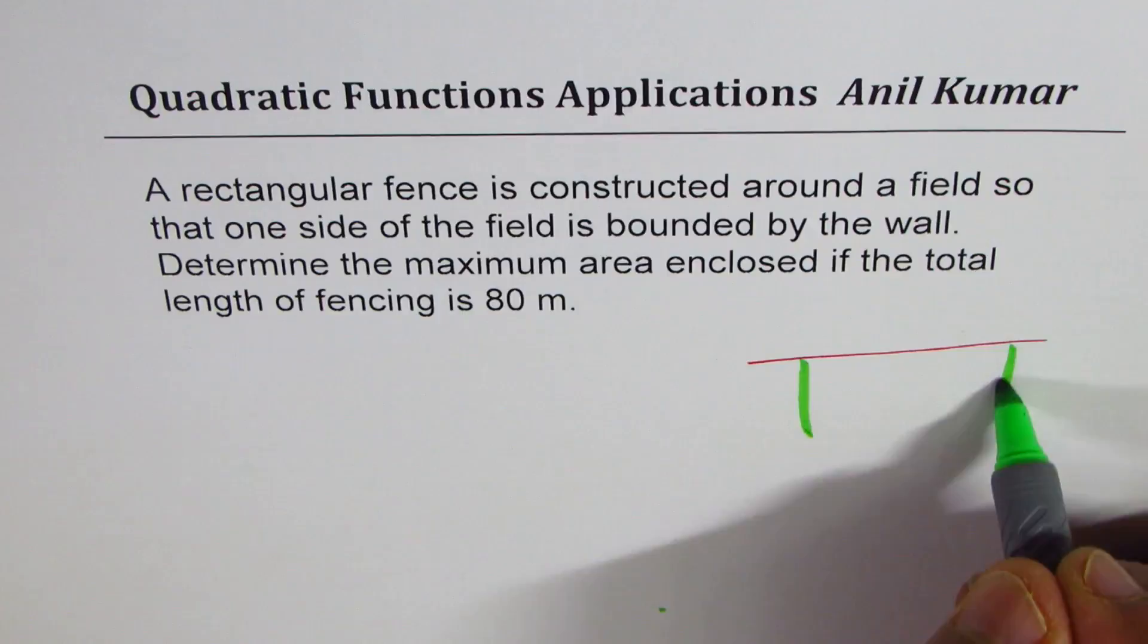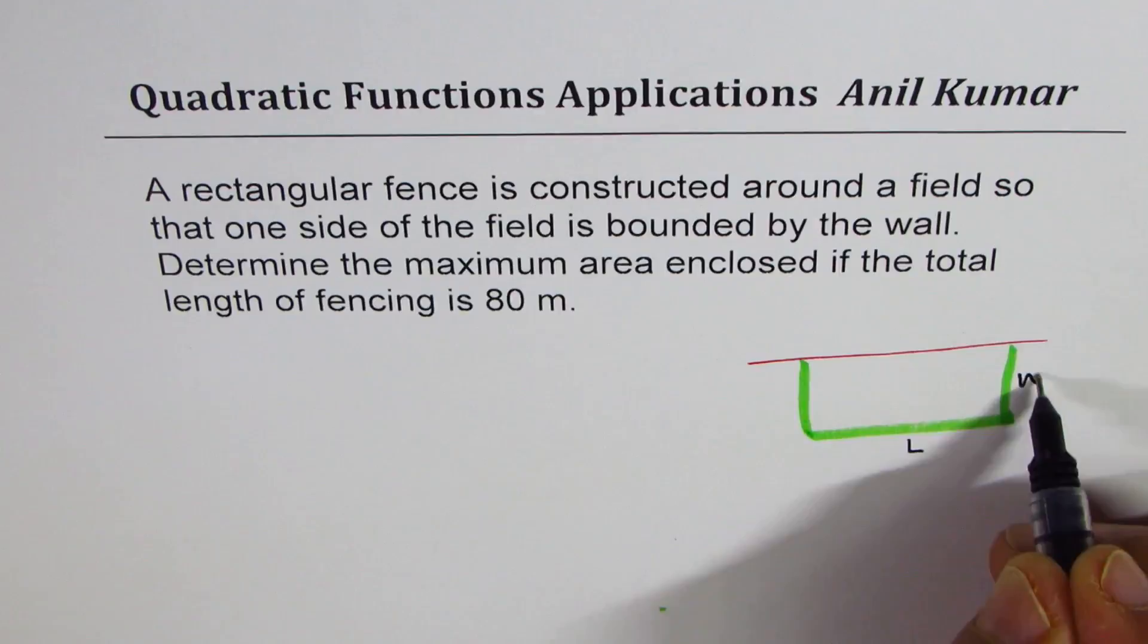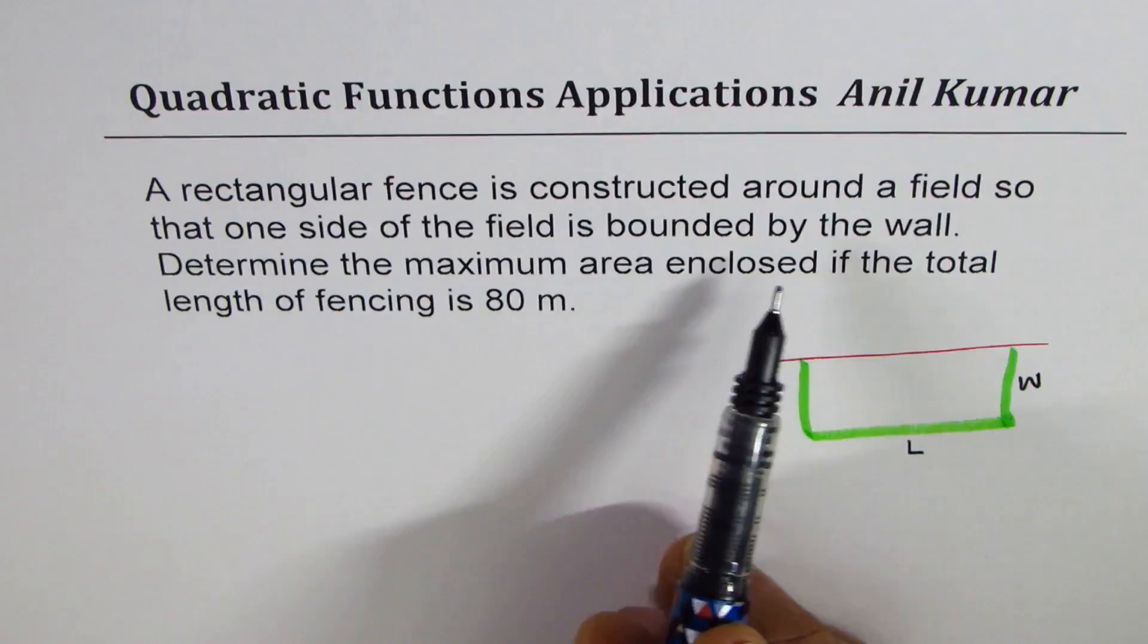Let us say we have a boundary here of the wall, and we want to fence some small area on the three sides. We'll assume that to be a rectangle. Let the length be L and width be W.